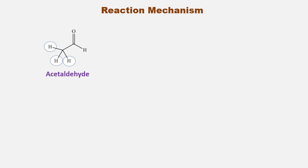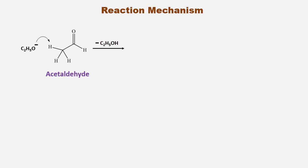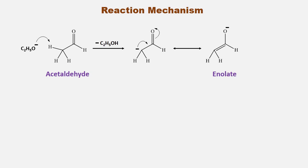Now let's begin with the reaction mechanism. Acetaldehyde contains three alpha hydrogens which are quite acidic in nature and can be easily abstracted by the base. In our reaction we are using NaOH in ethanol, which forms another base called ethoxide. In the first step, base ethoxide abstracts one of the acidic alpha hydrogens from the acetaldehyde molecule and forms a carbanion product which on resonance forms the enolate ion. This enolate formation is essential for the aldol condensation reaction, and hence this reaction is possible only when alpha hydrogens are present.